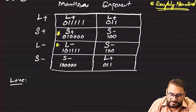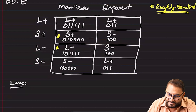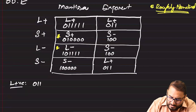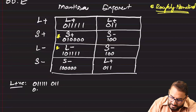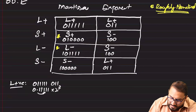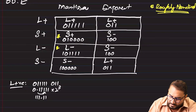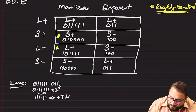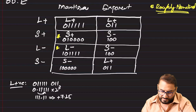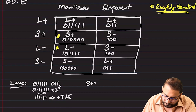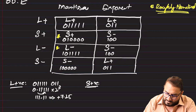For the largest positive number with six-bit mantissa and three-bit exponent: 0.111111 × 2^3. Moving the point three places right gives 111.111, which is plus 7.25. That is the largest positive number.